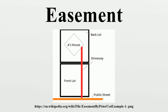The Restatement of Property takes steps to merge these concepts as servitudes. Easements are helpful for providing pathways across two or more pieces of property, or allowing an individual to fish in a privately owned pond. An easement is considered a property right in itself at common law, and is still treated as a type of property in most jurisdictions.